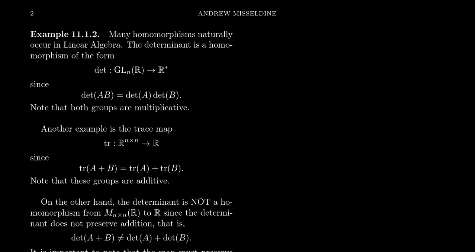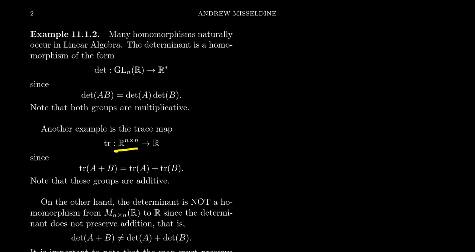Another example from linear algebra is the trace map. The trace of an n-by-n matrix is the sum of the diagonal entries. If we take the vector space of n-by-n real matrices as an additive group, the trace is a map from n-by-n matrices to the real numbers with respect to addition. The trace map also has the homomorphic property with respect to addition: the trace of (A+B) equals trace(A) plus trace(B). So this is the homomorphic property between these two additive groups.